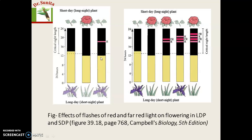When the night period is interrupted by a flash of red light, short day plants will not flower because they need a continuous dark period for flowering. Long night interruption prevents their flowering. However, the long day plant will flower when night periods are short.